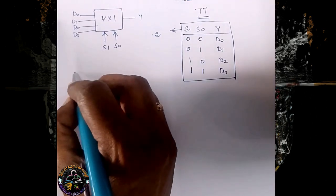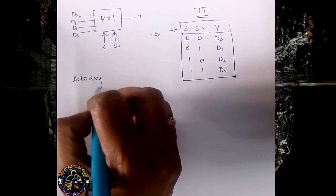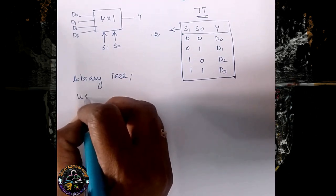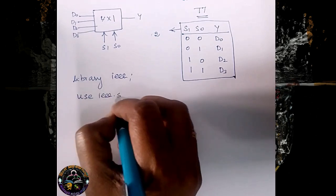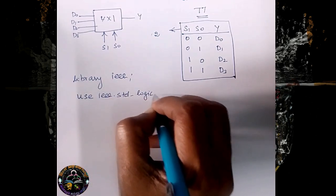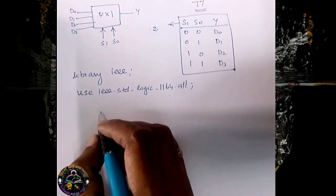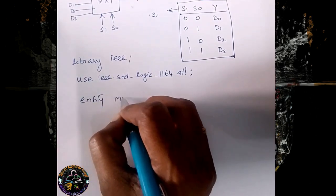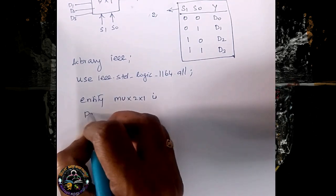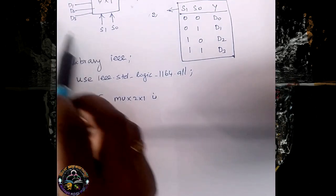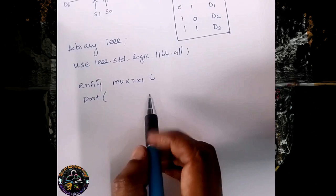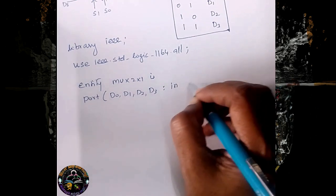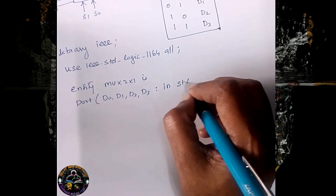First, we have to declare our library: library IEEE. Then we are going to use the IEEE inbuilt function, so we write: use IEEE.std_logic_1164.all. After this, we have to declare the entity — entity followed by the name of our entity. Then we list out all our input and output ports. We have 4 data inputs: D0, D1, D2 and D3. These are inputs, so we write 'in' followed by data type standard_logic.